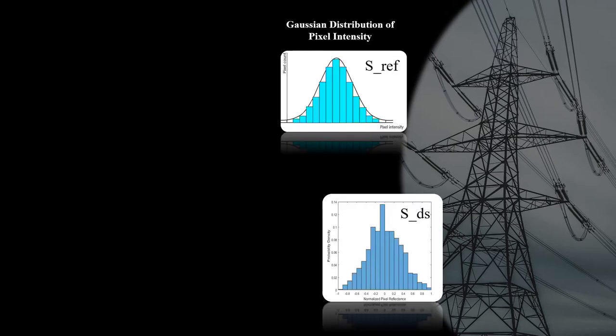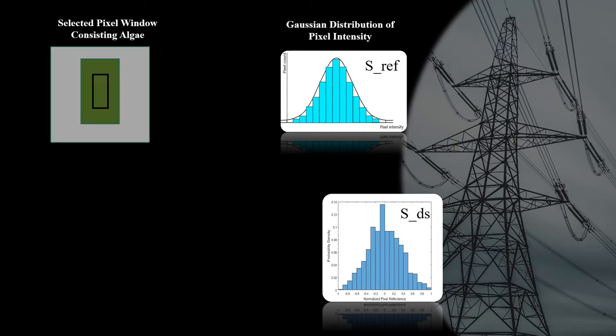Bhattacharya distance measures the statistical similarity between two Gaussian distributions, a reference and a sample. To create the reference distribution, a pixel window containing pure algae was extracted. The pixel-intensity distribution of extracted window was a Gaussian distribution.